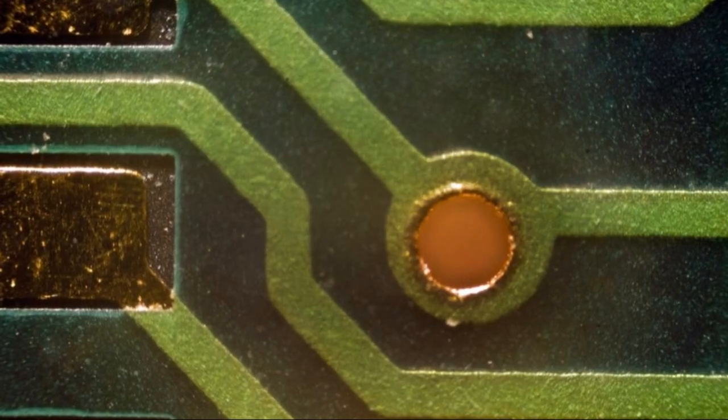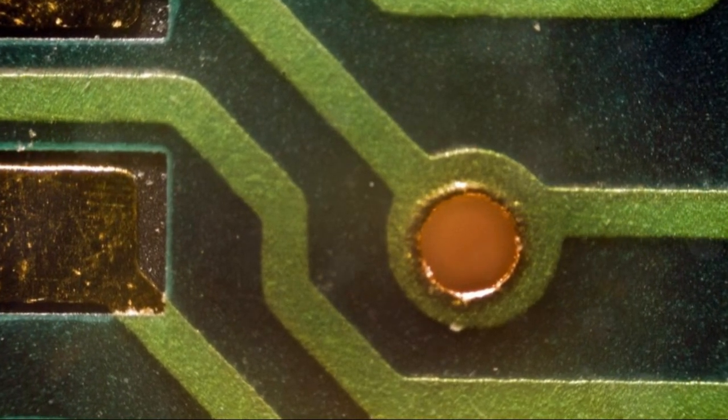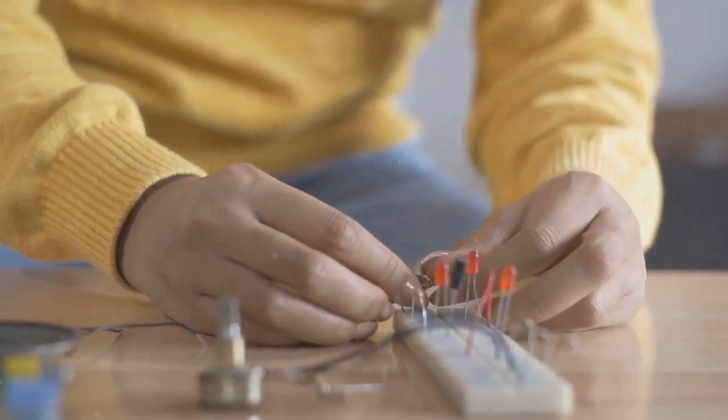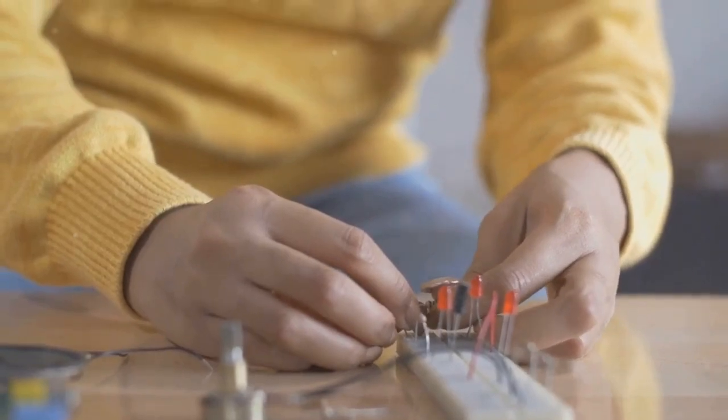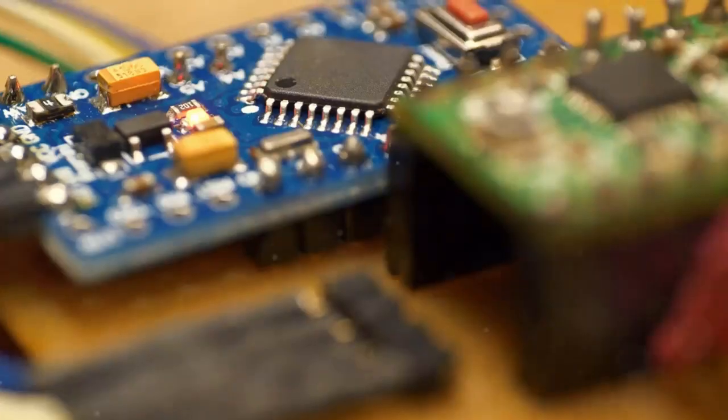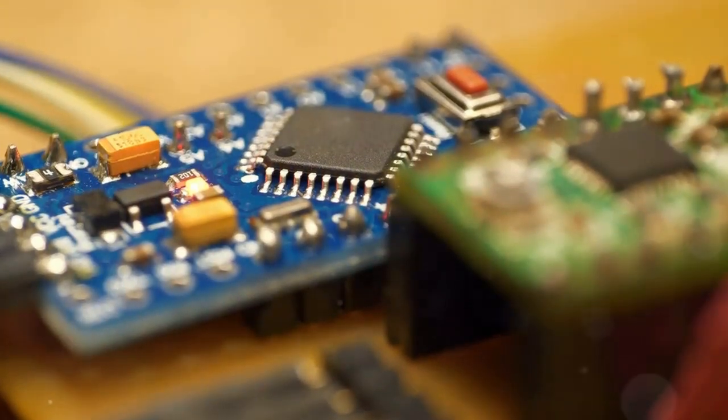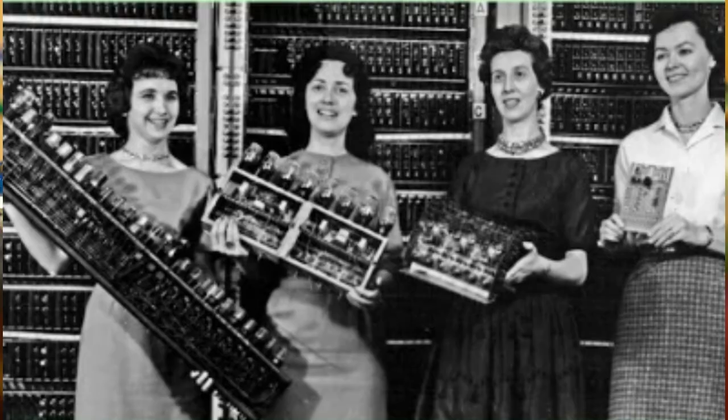The answer, it seemed, lay in the development of the circuit board. Before the advent of printed circuit boards, circuits were painstakingly crafted by hand. Imagine a time before microchips and transistors, when bulky vacuum tubes were the heart of electronic devices. These early circuits were a testament to the ingenuity and patience of the pioneers who built them.